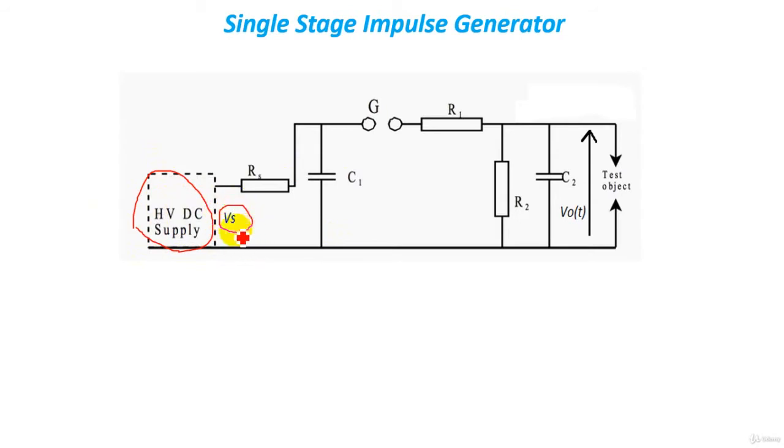And the input voltage here is Vs, is the input voltage to our circuit. Vs is of course high voltage DC. Also we have Rs limiting resistance to limit the current or the charging current through the capacitor C1. Also we have capacitor C1 which is called the charging capacitor.